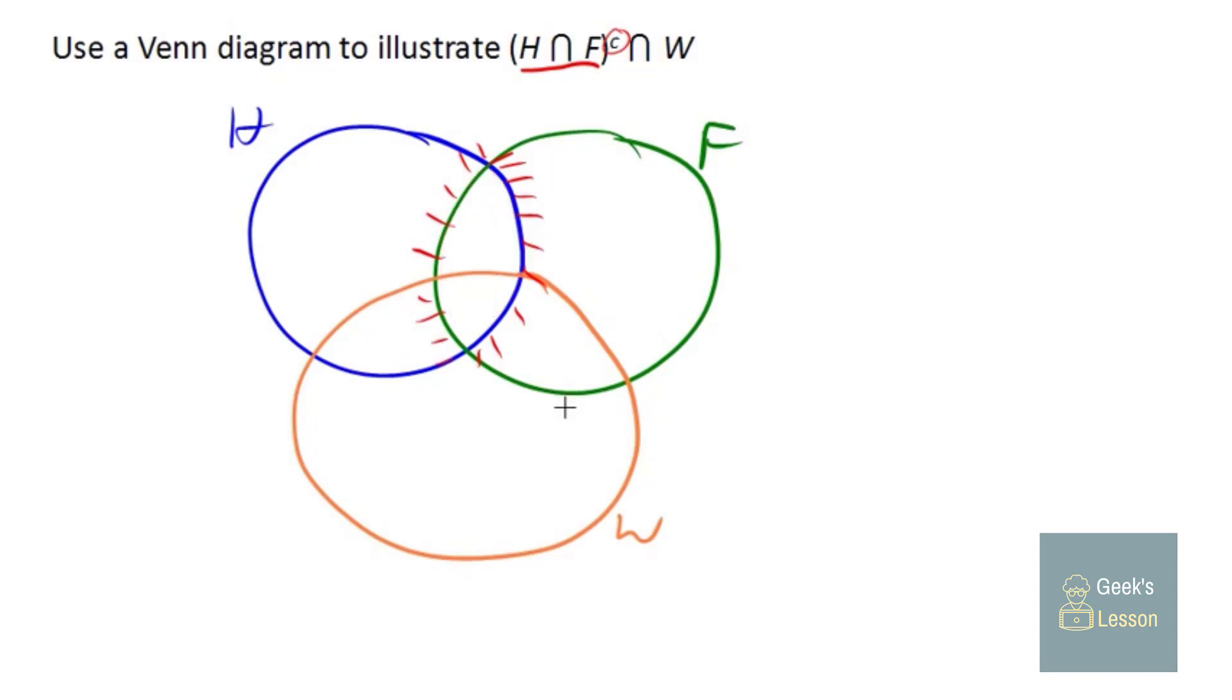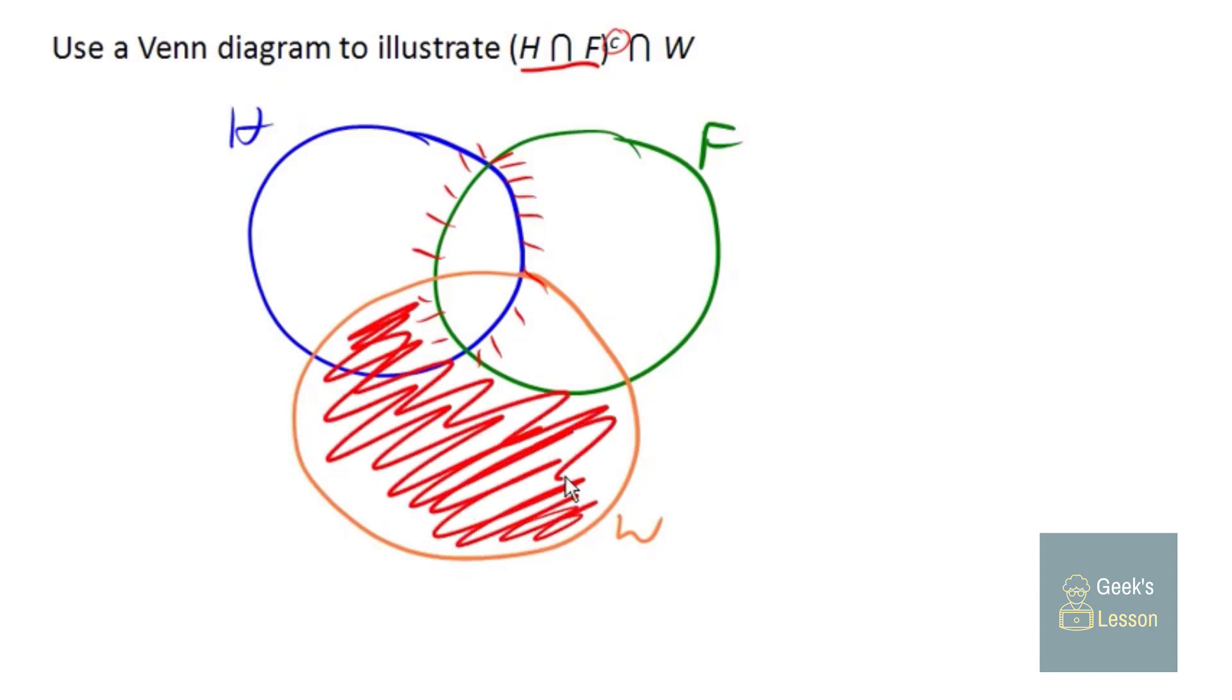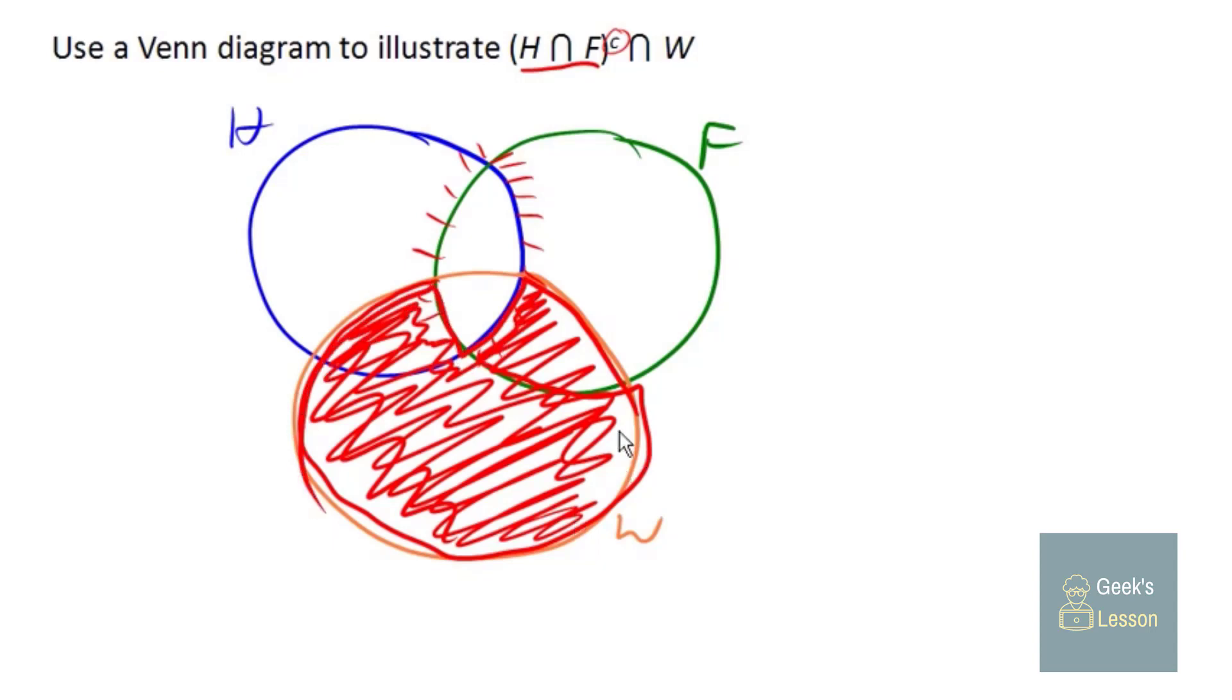Now we need the intersection between that and W. So we need everything in W, that's not in that little football-shaped region. So that's gonna be everything down here is fine. Everything over here is fine. Everything over here is fine. The part that we don't want is this part here. So all together we're gonna have that whole region there as that set.